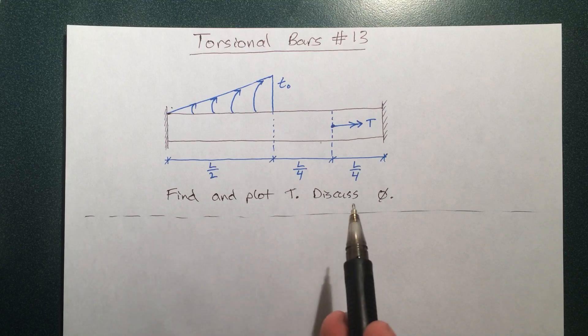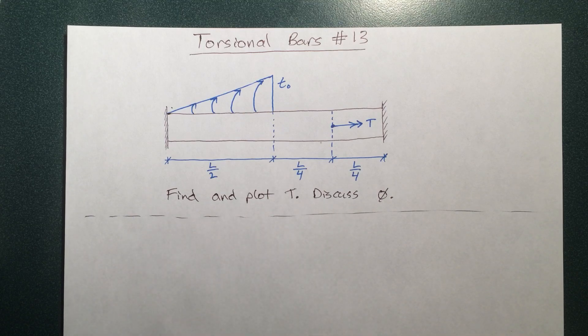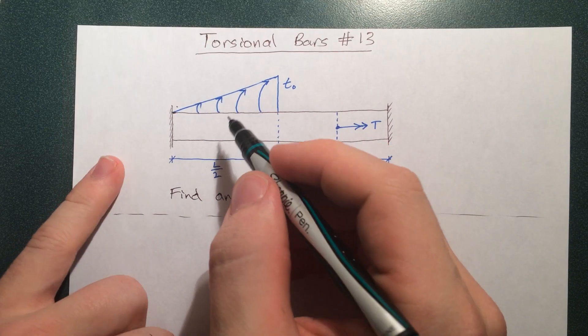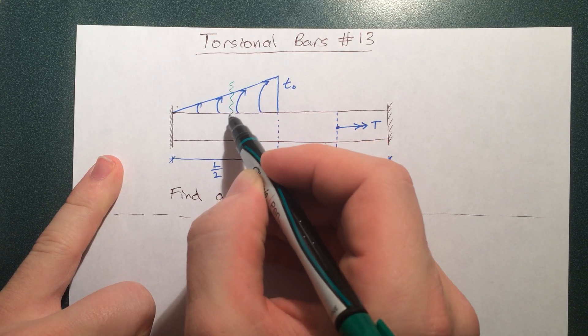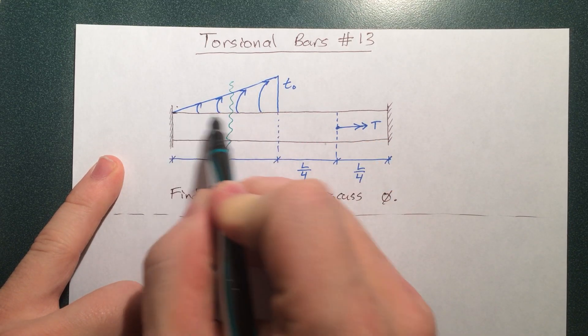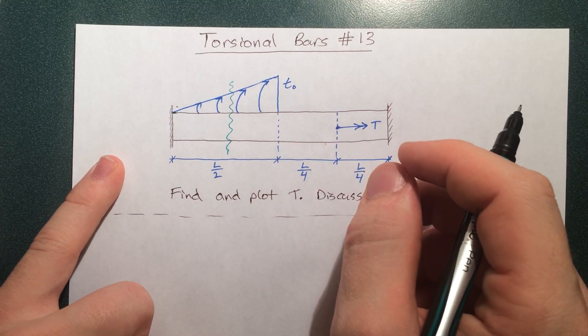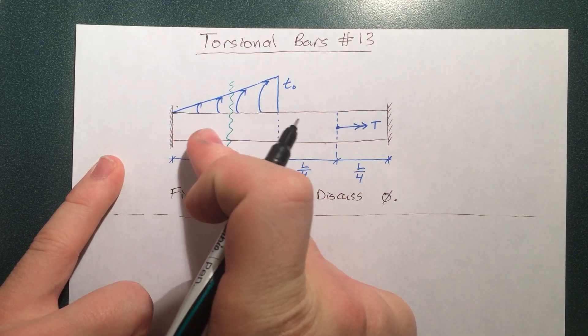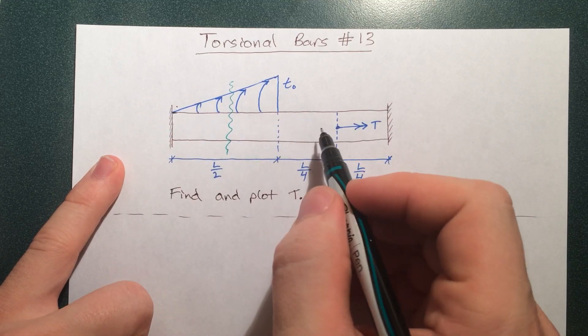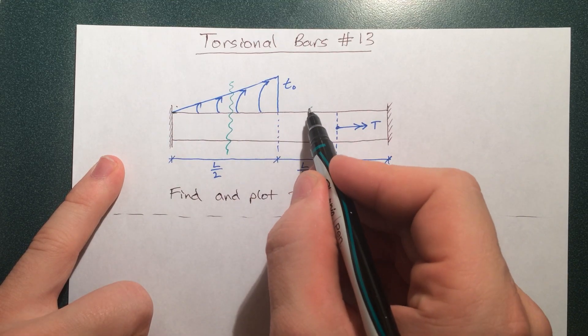So in order to find and plot T, the internal torque, we need to expose the internal torque, and we do that by making a series of cuts. The first cut we'll make is in this section here. Anywhere between this point and this point can all be described by the same set of mathematical equations. And here it changes. Make a cut there.